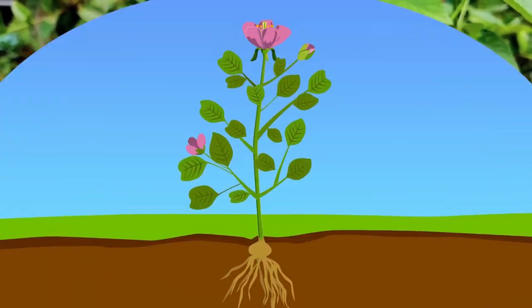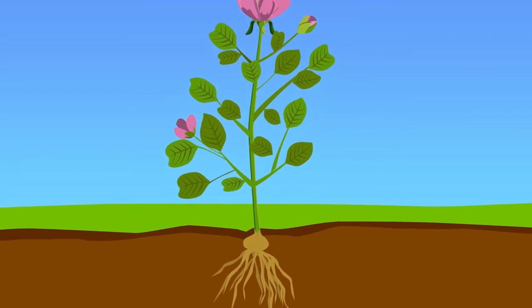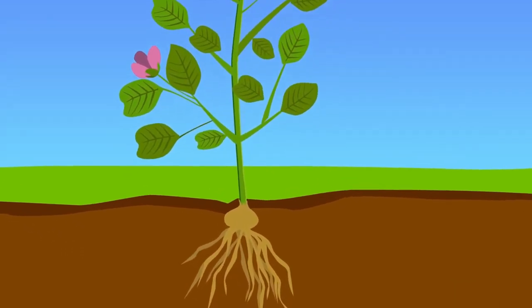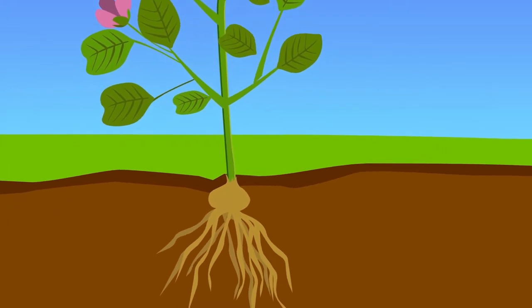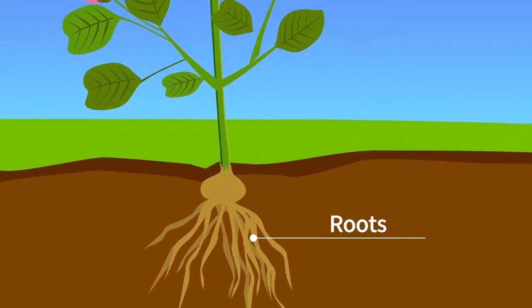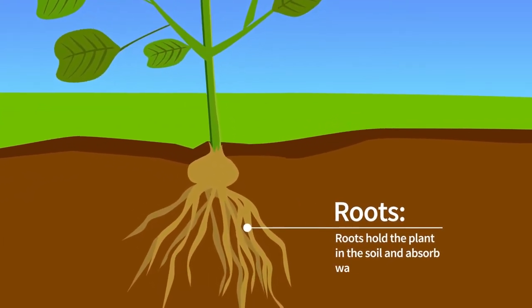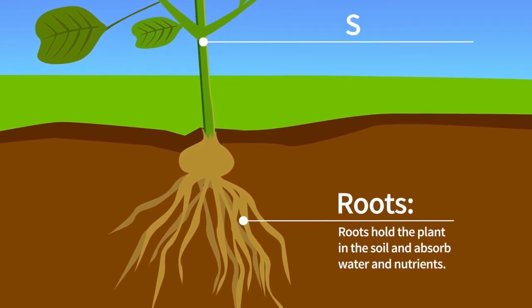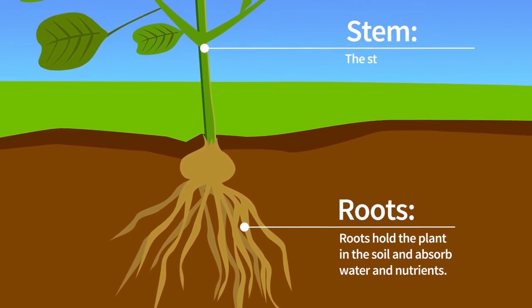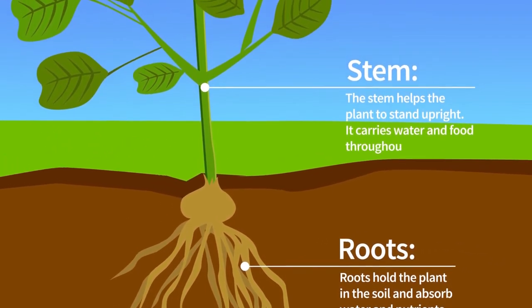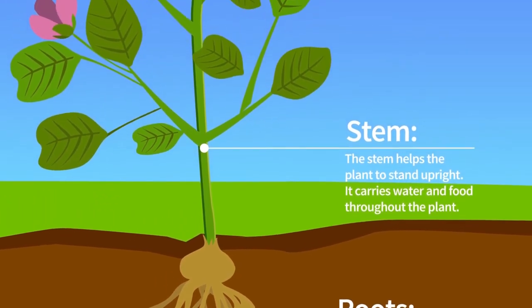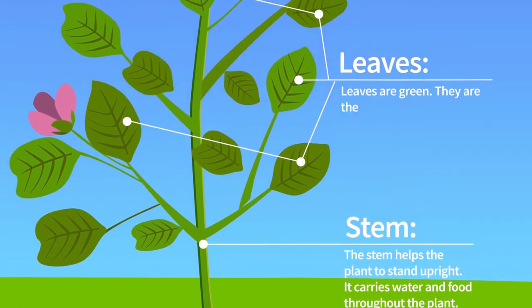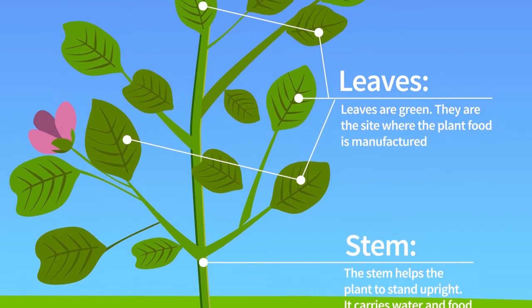Let us observe this flowering plant and identify its different parts. A flowering plant is made up of the following parts. The roots hold the plant in the soil and absorb water and nutrients. The stem helps the plant to stand upright and carries water and food throughout the plant.